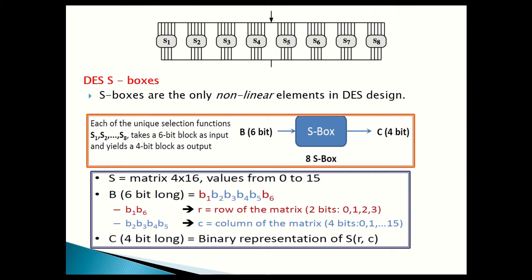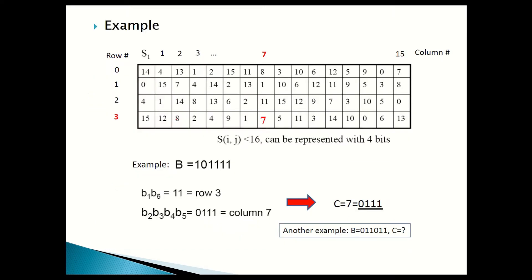Let's take a real example. For example, if we find this number — let's say we have 1, 0, 1, 1, 1, 1 — got it from the matrix. Let's say this one is S1. So what we do: we take the first bit and the last bit together. That will be 1 and 1 in binary. So this is the row.